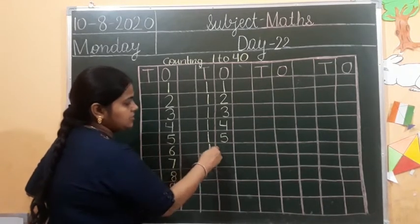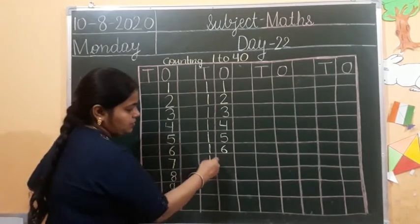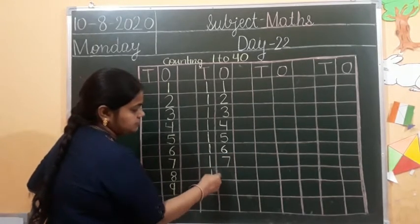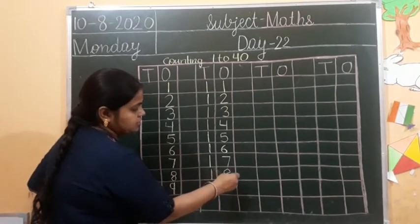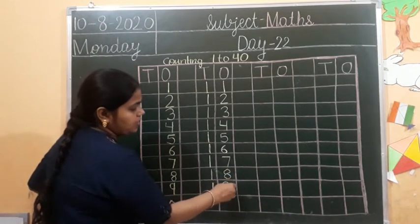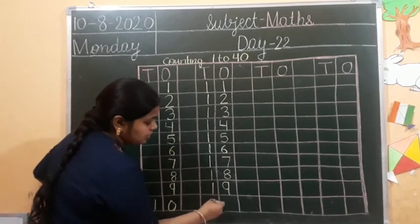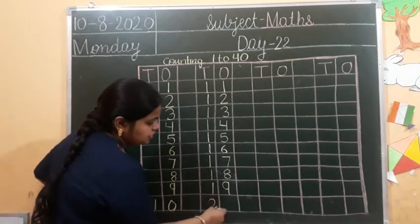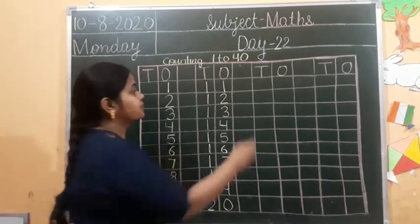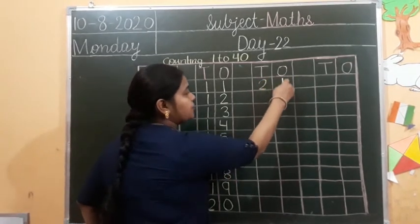1, 6 — 16. 1, 7 — 17. 1, 8 — 18. 1, 9 — 19. 2, 0 — 20. 2, 1 — 21.